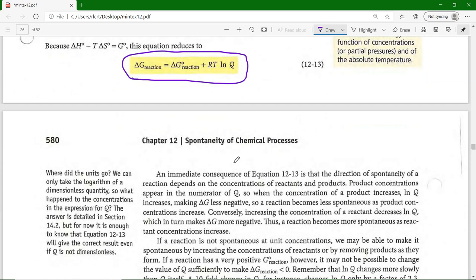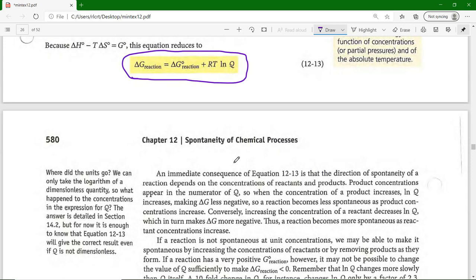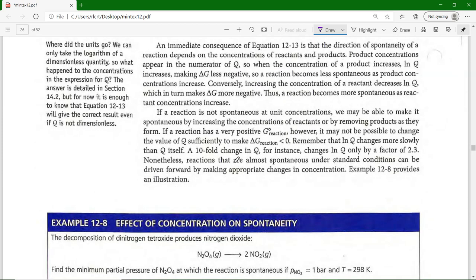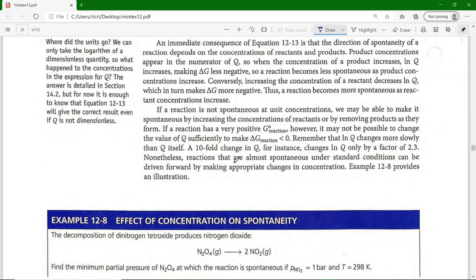So the reaction becomes less spontaneous as product concentration increases if you start with a reaction that is spontaneous. And you have the converse as well: a reaction becomes more spontaneous as the reactant concentration increases, if again it starts off as being spontaneous. The equation will give the correct results even if Q is not dimensionless.